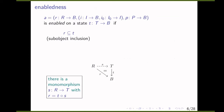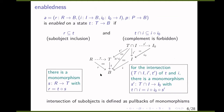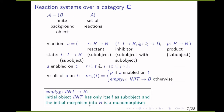Such a reaction is enabled on a state T if the reactant is included in the state, which is defined by sub-object inclusion—meaning there is a monomorphism from R to T such that the diagram commutes. The second condition is that the intersection of the state with the first part of the inhibitor is a sub-object included in the composition of the first and latter part of the inhibitor, meaning the complement is forbidden. The result of an enabled reaction is the product sub-object, and the empty sub-object otherwise.